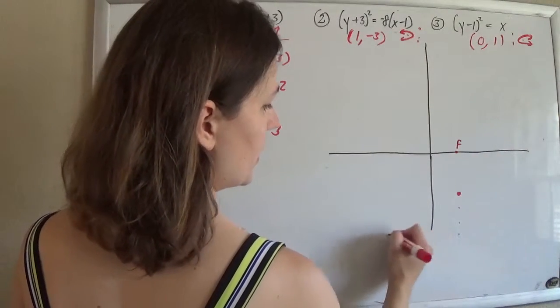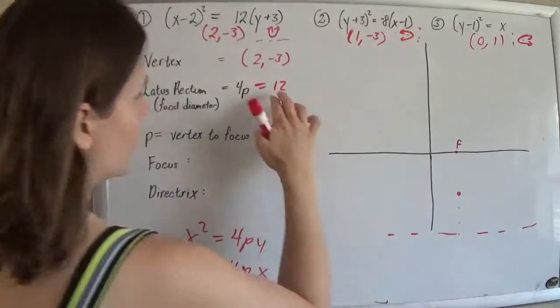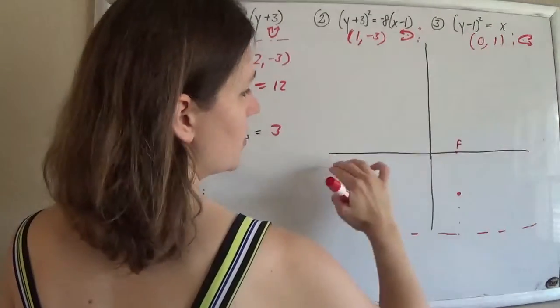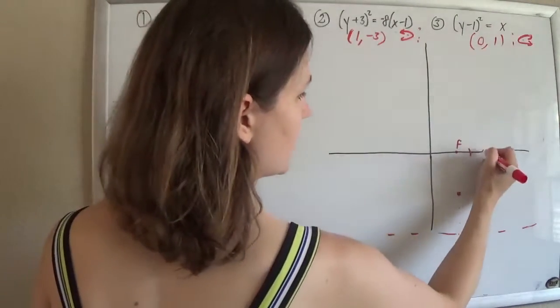And then down 1, 2, 3 to get my directrix. The focal diameter is 12, so 12 across the focus, so 6 on either side.